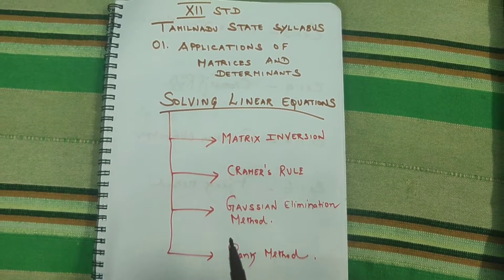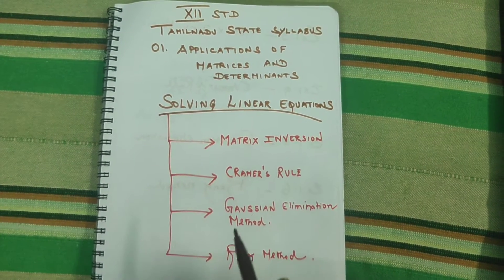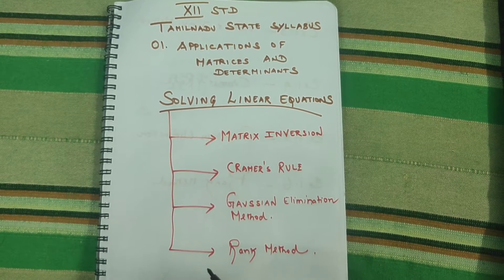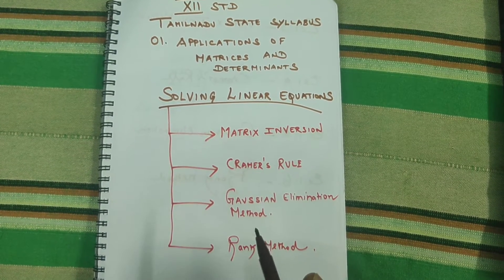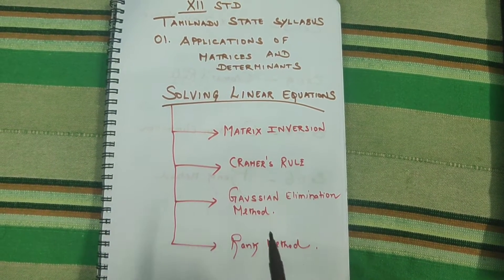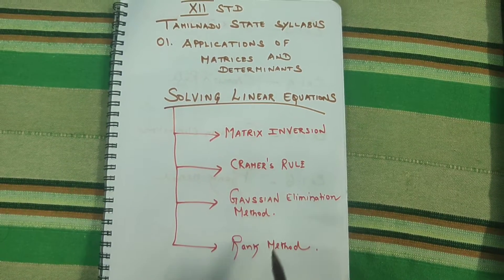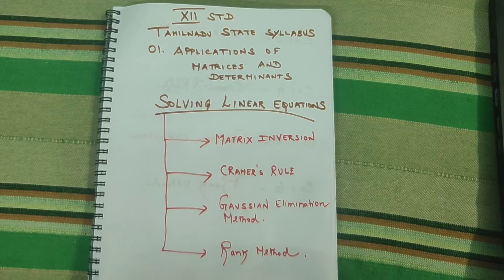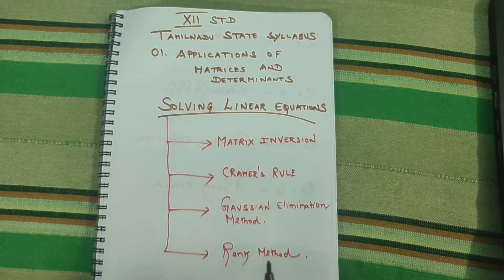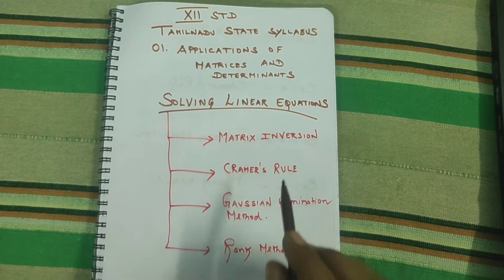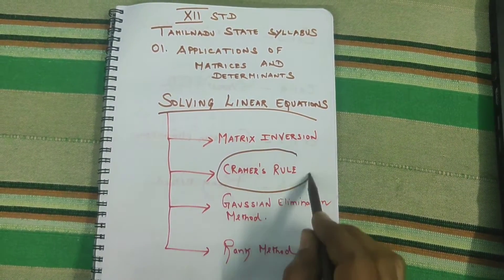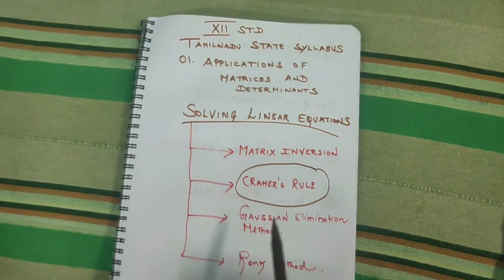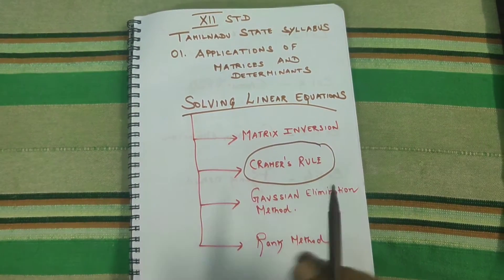Up to 10th standard we solved equations using the substitution method or the elimination method. Now in 12th standard we use matrix inversion, Cramer's rule, Gaussian elimination, and rank method — four methods. If you learn these, you can master the first chapter. Today I am going to focus on Cramer's rule, a very easy model, used to solve linear equations.